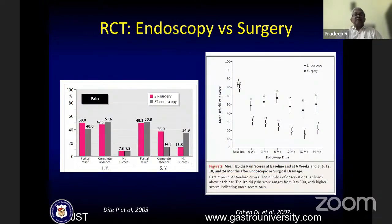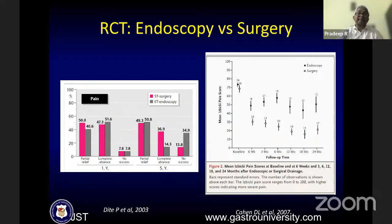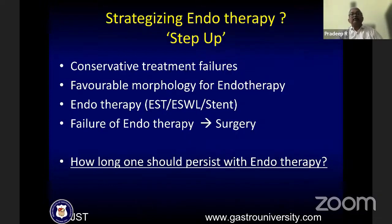Randomized trials — though with a lot of criticism — showed that while early pain relief is good with endotherapy, surgery has better long-term results for pain relief compared to endotherapy. This led to the step-up approach: conservative treatment failure → favorable morphology for endotherapy → ESWL and stenting → failure of endotherapy → surgery. The question is, how long should one persist with endotherapy? Patients continue to have pain despite endotherapy and require frequent stent exchanges.